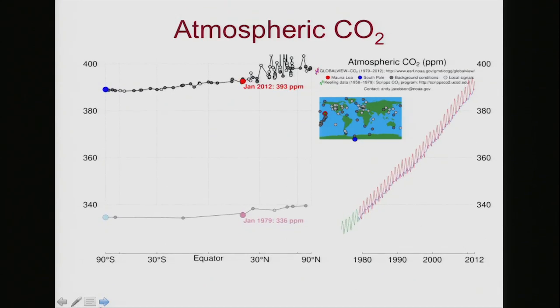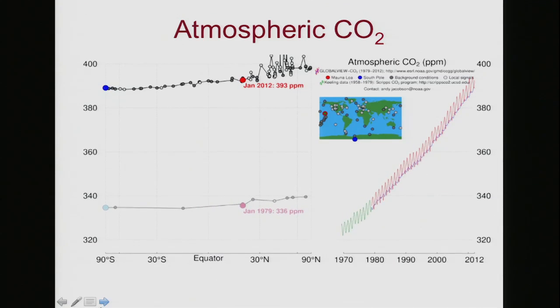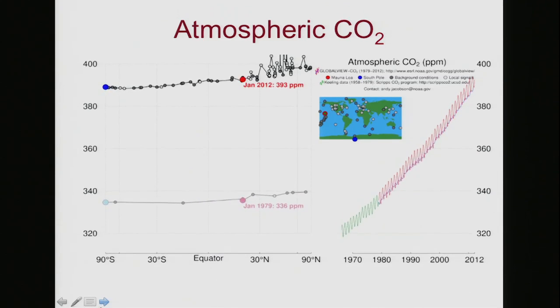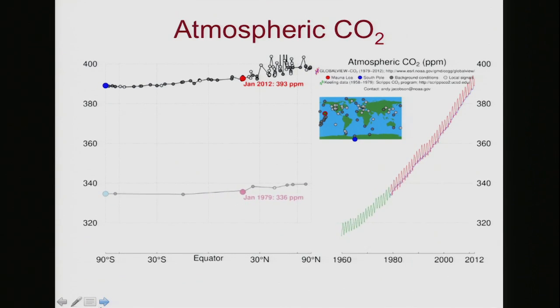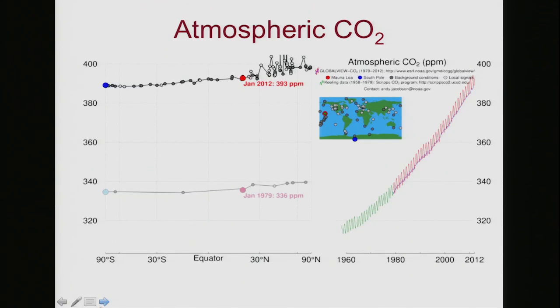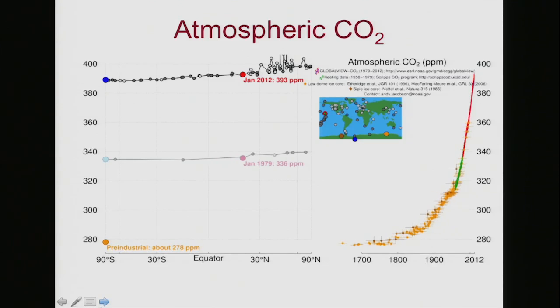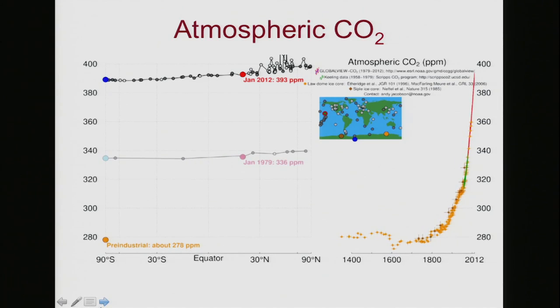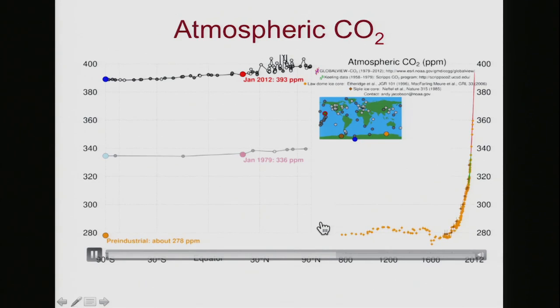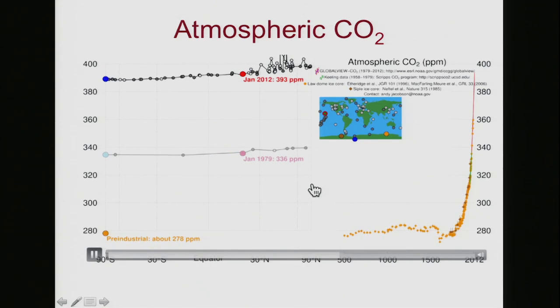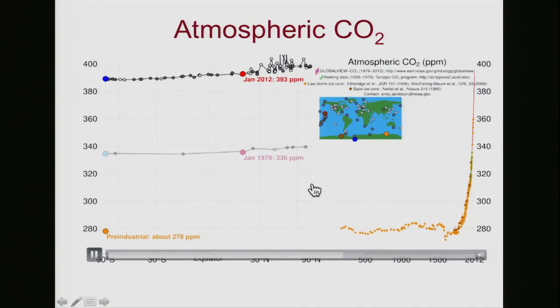This 400 parts per million is a pretty scary limit, because a lot of atmospheric scientists predict that once we get above 400 parts per million, we're going to see significant rises in global temperature. The right-hand chart is now extrapolating backwards, extending back over the centuries based on various indirect measures of CO2 that are reliable and accurate.